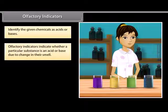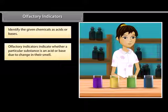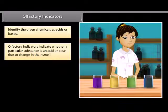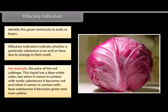Olfactory indicators are used in the laboratory to test whether a solution is a base or an acid by a process called olfactory titration. An olfactory indicator works on the principle that when an acid or base is added to a substance, its odor cannot be detected. For example, the juice of the red cabbage.